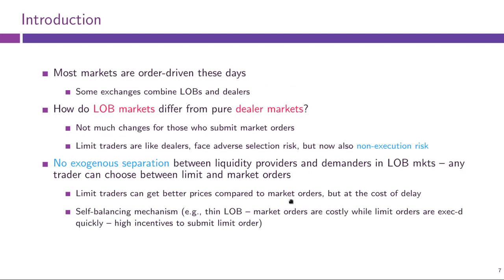This is a non-trivial choice between limit and market orders. Of interest is the self-balancing property of markets where this choice is present. If your limit order book is thin — not much liquidity, large spreads, low depth — then using a market order is very expensive, while the potential price saving from a limit order is significant. Furthermore, because the book is thin, you face lower non-execution risk since you have less competition from other limit orders.